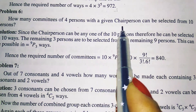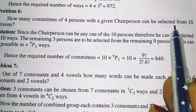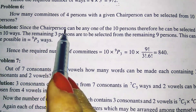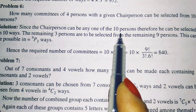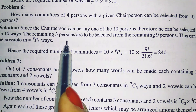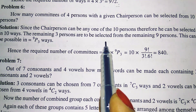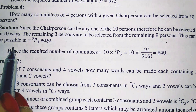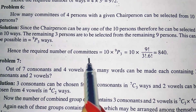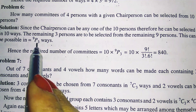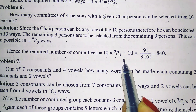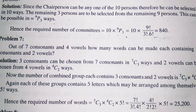How many committees of four persons with a given chairperson can be selected from ten persons? Since the chairperson can be any one of the ten persons, he can be selected in 10 ways. The remaining three persons are to be selected from the remaining nine persons, which can be done in 9P3 ways. Hence the required number of committees is 10 × 9P3.